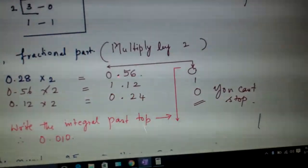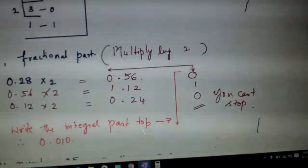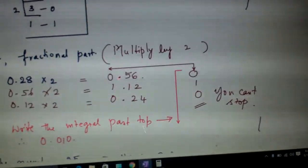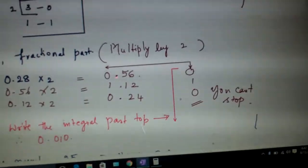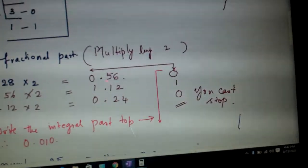Now consider only 0.56 times 2, that is 1.12. Then this is written here, 0.12 is written here. Multiply it with 2. This is what you are getting.